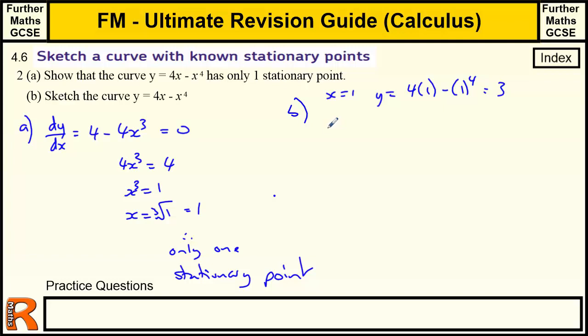What type of stationary point is it? So if we differentiate it again, d²y/dx² = -12x². And we know that x = 1, so that tells us that d²y/dx² = -12(1)² = -12. Therefore a maximum.